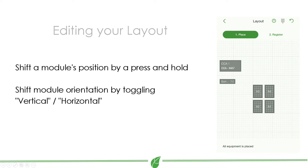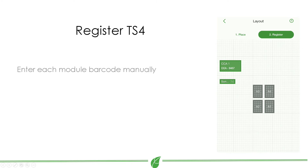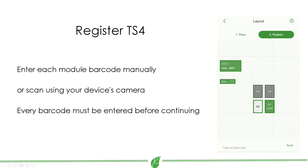Once all the equipment is placed, each TS4 must be registered using its barcode on the map that you created. Select register and tap a gray module to enter its barcode, or scan it via the new built-in app scanner using your mobile phone's camera.